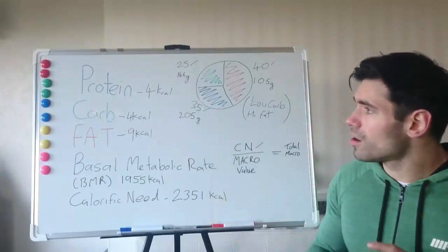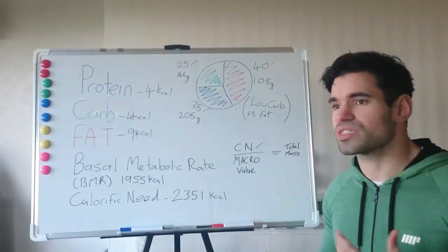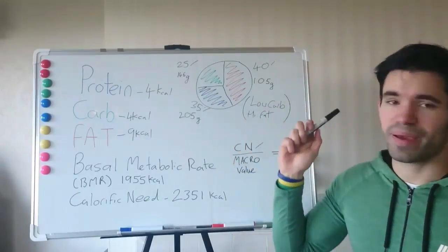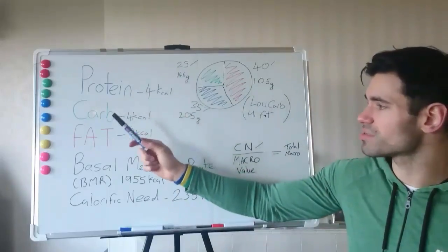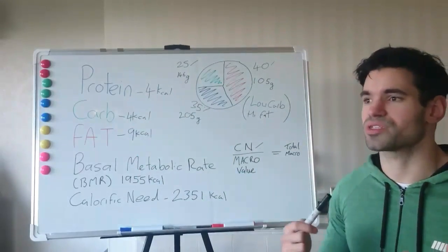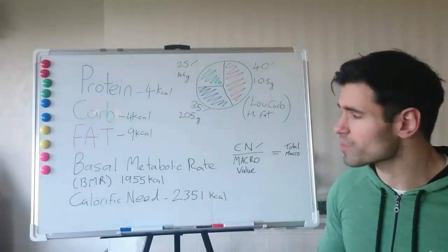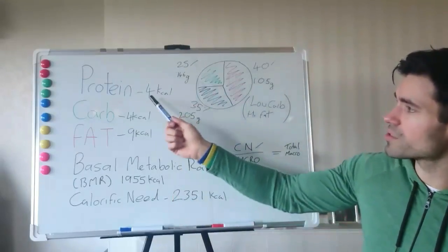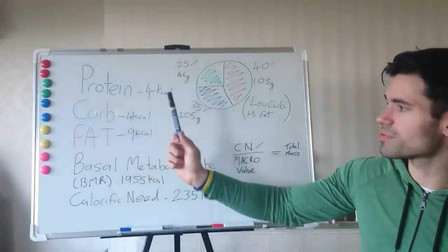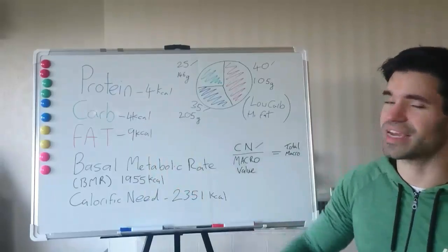So first thing to start with is understanding our macronutrients. We have three basic macronutrients: protein, carbs, and fat. Each one has a calorific value. Per gram, protein has 4 calories, carbs have 4 calories, and fat has 9 calories per gram.